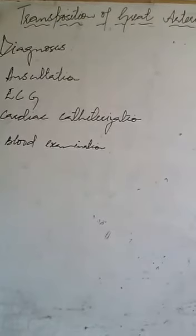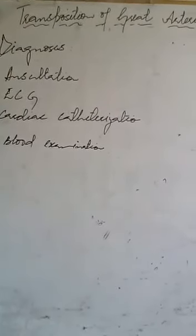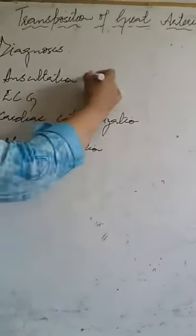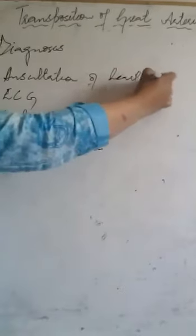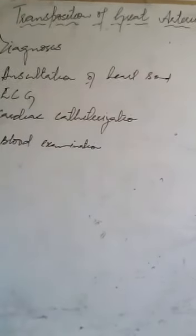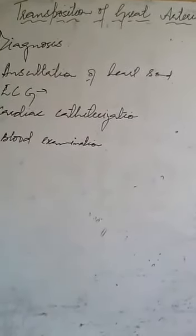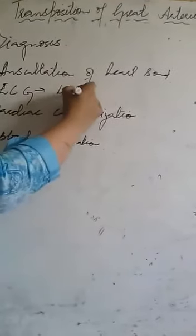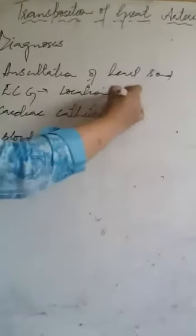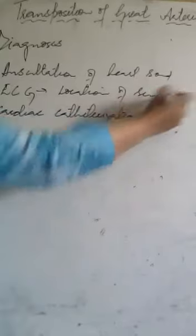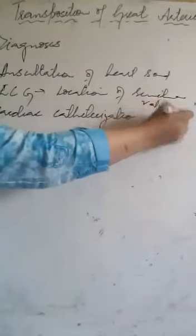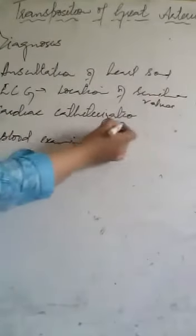Diagnostic evaluation is done by auscultation of heart sounds and electrocardiography (ECG), which is performed to find out the location of the semilunar valves.